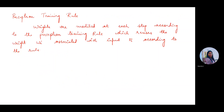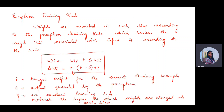Coming to the first type of rule, that is the perceptron rule: weights are modified at each step according to the perceptron training rule, which revises the weight WI associated with input XI. The perceptron rule is given by the formula WI = WI + delta(WI), where delta(WI) = mu * (T - O) * XI. Here mu is called the learning rate, which is a positive constant value.